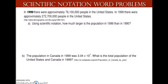Let's take a look at solving word problems in scientific notation. The problem reads: in 1990, there were approximately 76 million people in the United States. Nine years later, in 1999, there were approximately 272 million people. Part A wants us to use scientific notation to find out how much larger the population is in 1999 than in 1990.